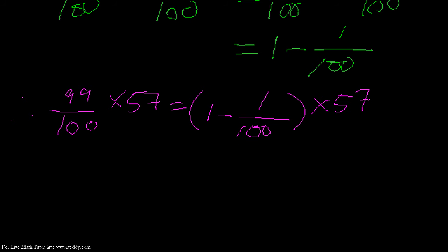What happens here? First, 1 times 57, then the minus sign, and next, 1/100 times 57. That means 1 times 57 is 57, then I have the minus sign, and then 57/100.